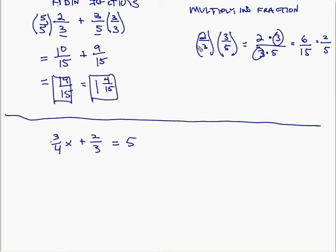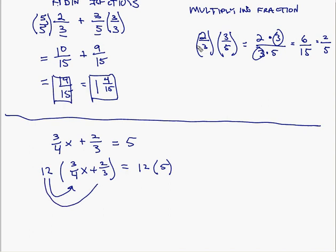What we're going to do is multiply both sides of the equation by twelve. So we multiply twelve times the quantity three-fourths x plus two-thirds, and also twelve times five on the other side. Using the distributive property, this gives us twelve times three-fourths x plus twelve times two-thirds equals twelve times five.